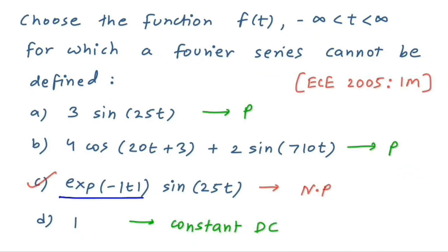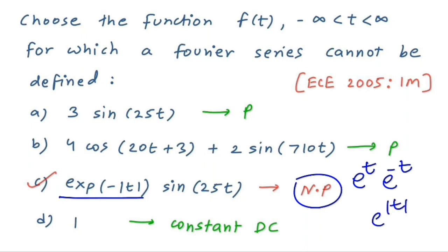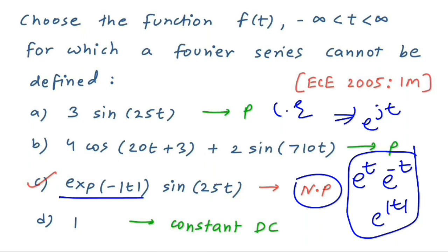Important note: whenever you have an exponential function — e raised to t, e raised to −t, or e raised to |t| — that signal is non-periodic. Remember that e^(jt) is a complex exponential, which is periodic with period 2π, but normal exponential signals are not periodic. Hence we cannot apply the Fourier series concept to them. Option C in the second question falls into this category.